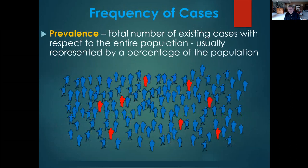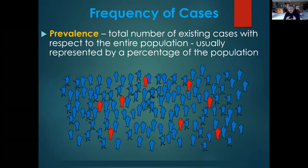Let's define a few epidemiological terms. Frequency is simply the number of cases. Prevalence is a subset of frequency — the accumulated total of existing cases with respect to the entire population. We can ask: what is the prevalence of influenza in New York State, AIDS in the United States, or COVID-19 in Cattaraugus County? This depends on what population our study involves — local, broad, or even global.